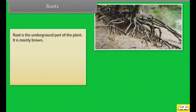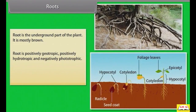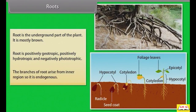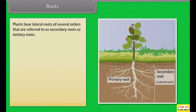Root is the underground part of the plant. It is mostly brown. Root is positively geotropic, positively hydrotropic, and negatively phototropic. The branches of root arise from the inner region, so it is endogenous. Plants bear lateral roots of several orders that are referred to as secondary roots or tertiary roots.